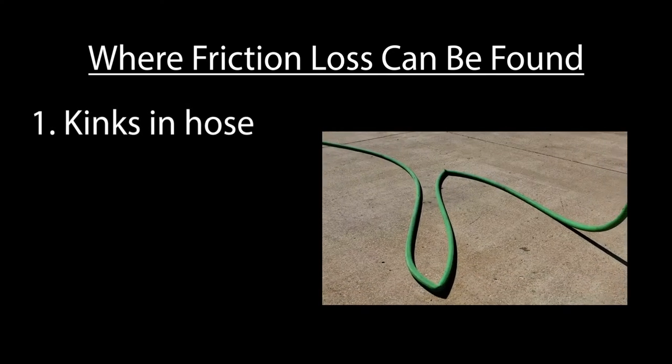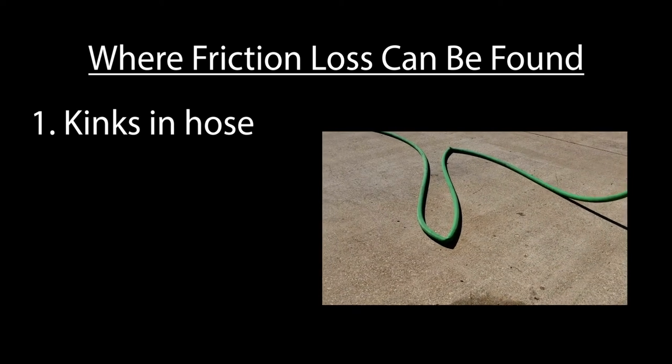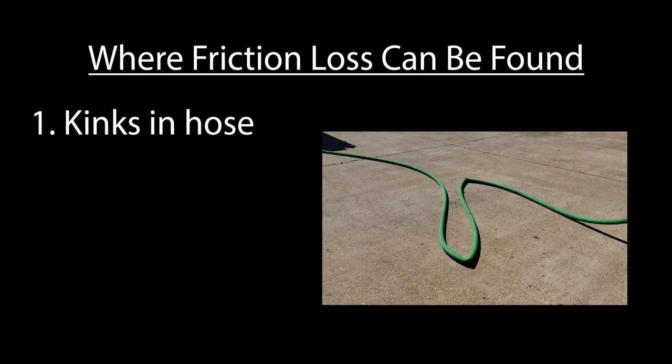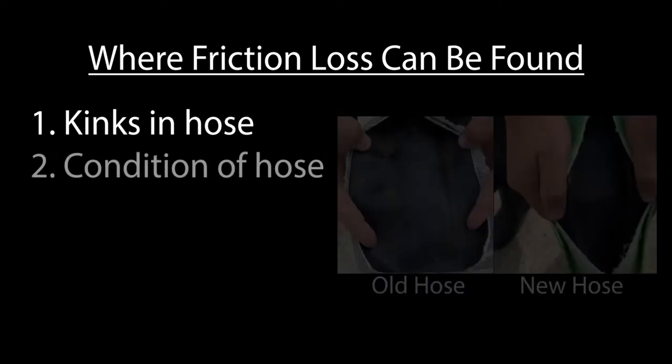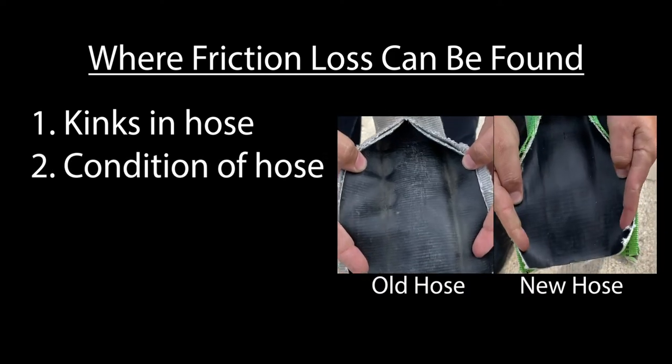kinks in the hose line reduce the diameter of the flow path, restricting water flow and increasing friction. Aged and deteriorating hose have rougher linings, which creates greater friction.